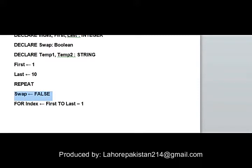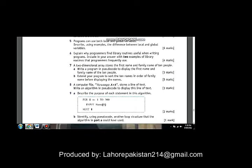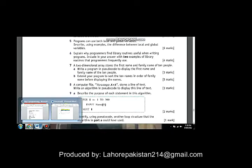In the loop, swapping is set to false initially, and the index starts going from 1 till 9, checking the whole list. Let me explain how the swapping works.